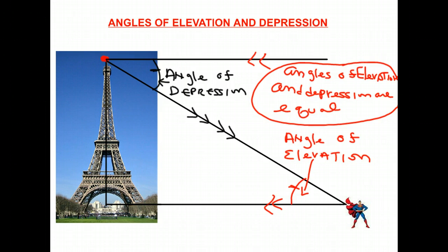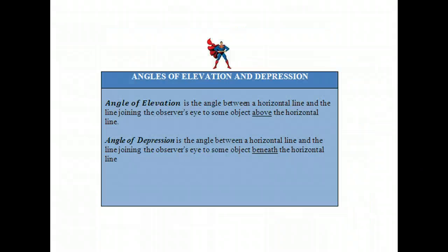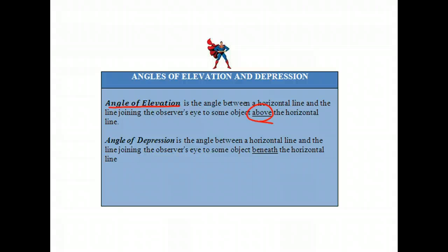Let's sum up what we've learned. The angle of elevation is the angle between the horizontal line and the line joining the observer's eye to an object above the horizontal line — 'above' is important. The angle of depression is the angle between the horizontal line and the line joining the observer's eye to some object beneath the horizontal line.